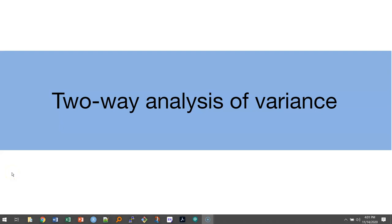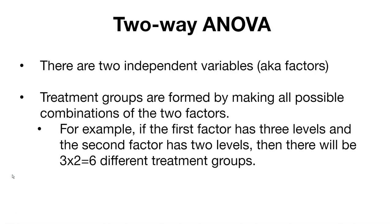In this video, we'll talk about two-way analysis of variance. In the two-way ANOVA, we compare the mean differences between groups that have been split on two different independent variables. We might call these independent variables factors. The primary purpose of the two-way ANOVA is to understand if there is an interaction between the two independent variables on the dependent variable that we're interested in.